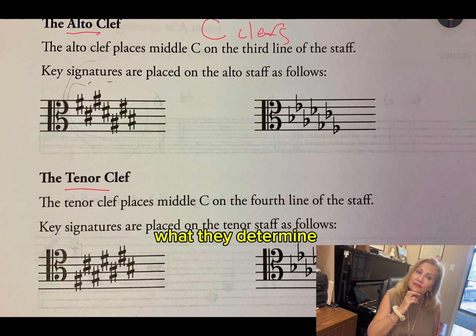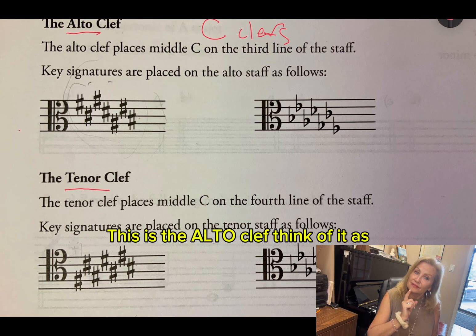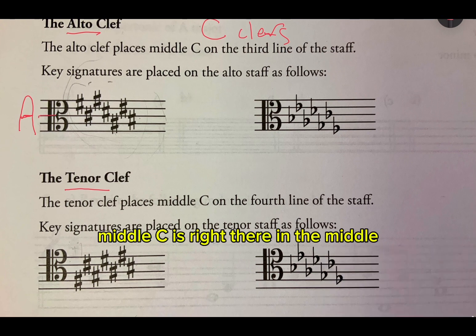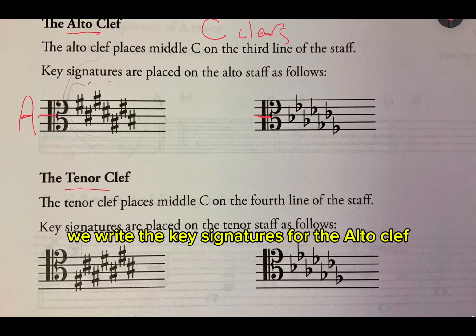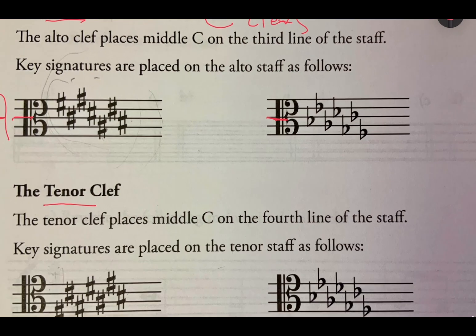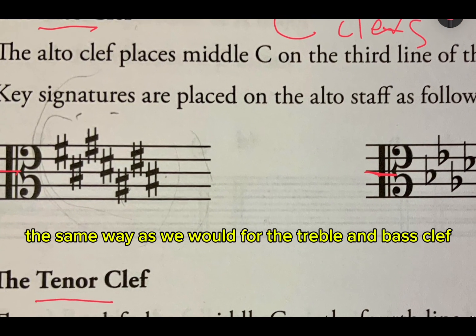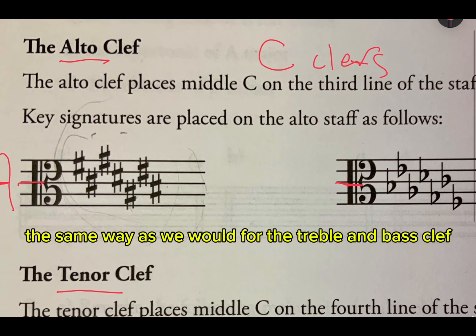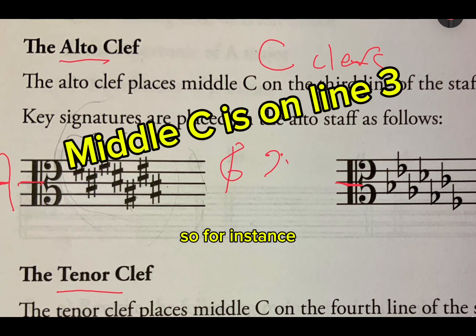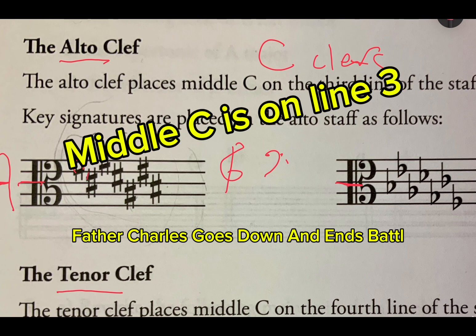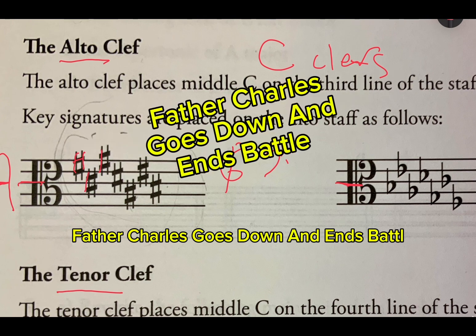What they determine — so for instance, this is the alto clef. Think of it as an A. Middle C is right there in the middle. We write the key signatures for the alto clef the same way as we would for the treble clef and bass clef. So for instance: Father Charles goes down and ends battle.